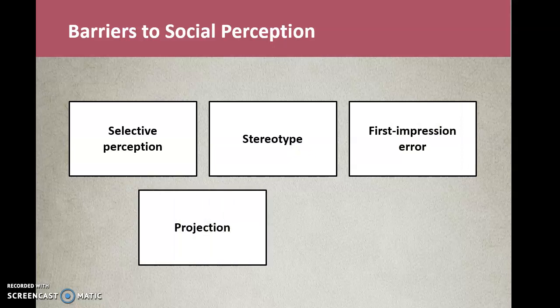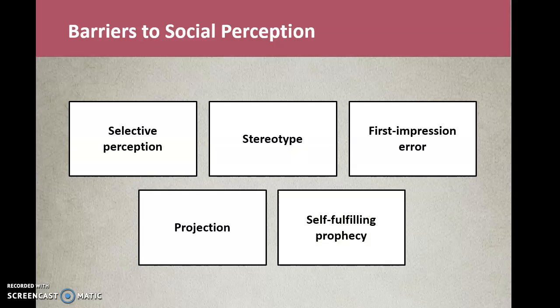Projection, also known as false consensus, causes inaccurate perception of others. We project our own beliefs and values and think those are the norms — this happens when we project ourselves onto people and want others to be similar to us. Then there's the self-fulfilling prophecy, called the Pygmalion effect — if you've seen My Fair Lady. Our expectations color how we interact with and view others.